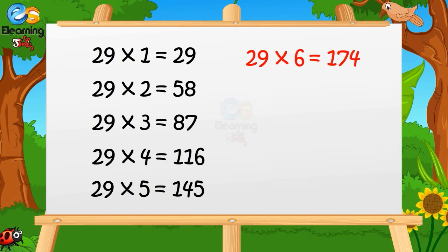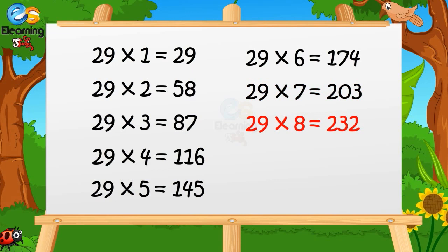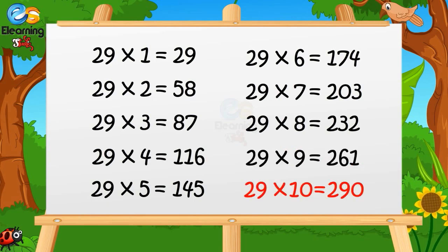29 sevens are 203. 29 eights are 232. 29 nines are 261. 29 tens are 290.